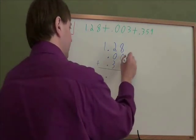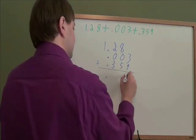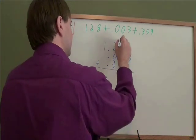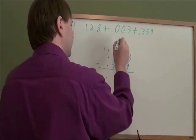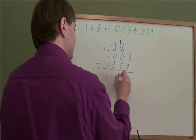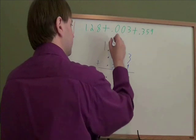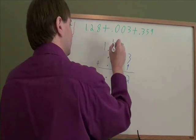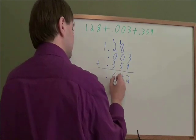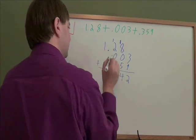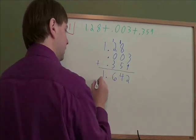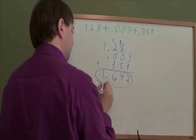And then we can just add. 3 plus 9 is 12. Always start at the right side when you're adding these things together because a lot of times you'll need to carry a 1. 1 plus 8 is 9, plus 5 is 14, put the 4 down, carry the 1. 1 plus 2 is 3, plus 0 is 3, plus 3 is 6. Didn't need to carry anything that time. 1 plus nothing is 1, and that is our answer, 1.642.